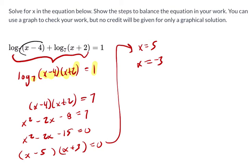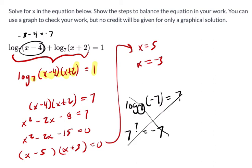if x is negative 3, we have a problem because right here you've got negative 3 minus 4, and that's negative 7, and you can't take the log. Look at this, log base 7 of negative 7. This has no answer. It's undefined. There's no power of 7, 7 to what power would equal negative 7? It's undefined. So this answer is rejected.